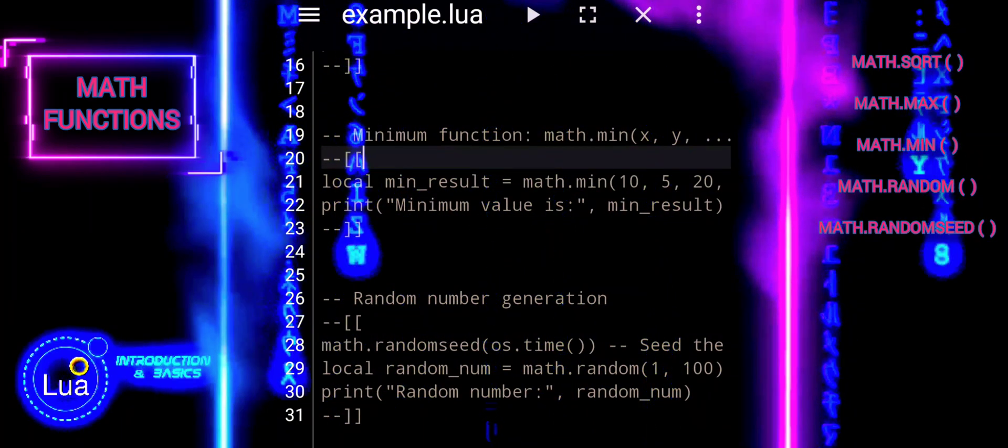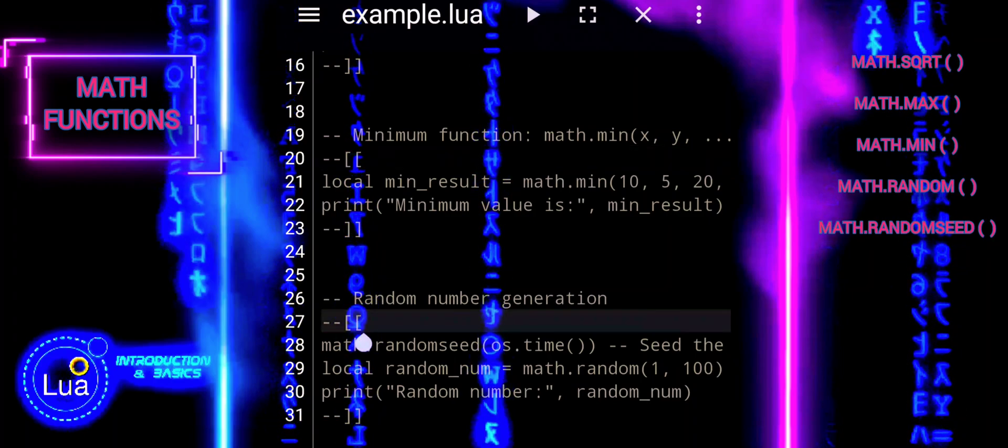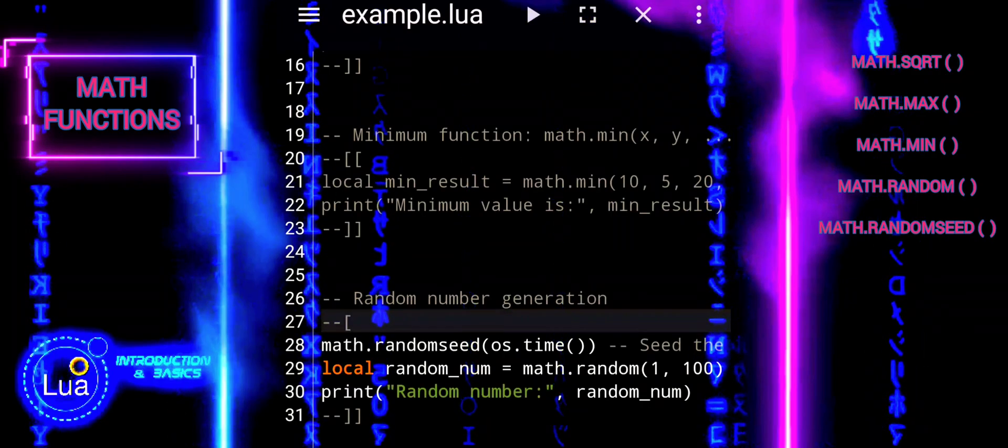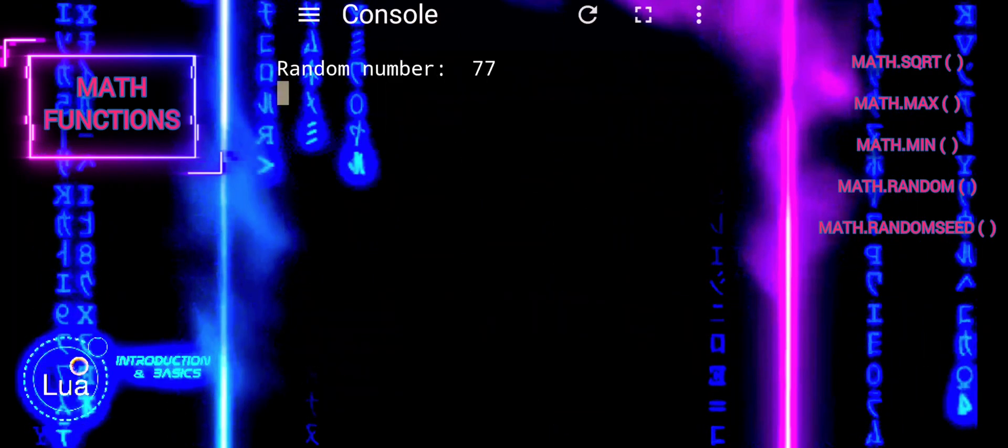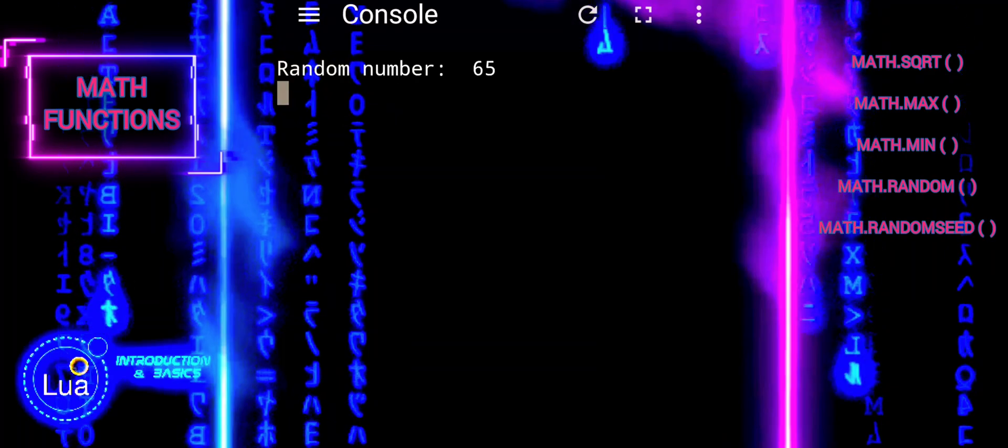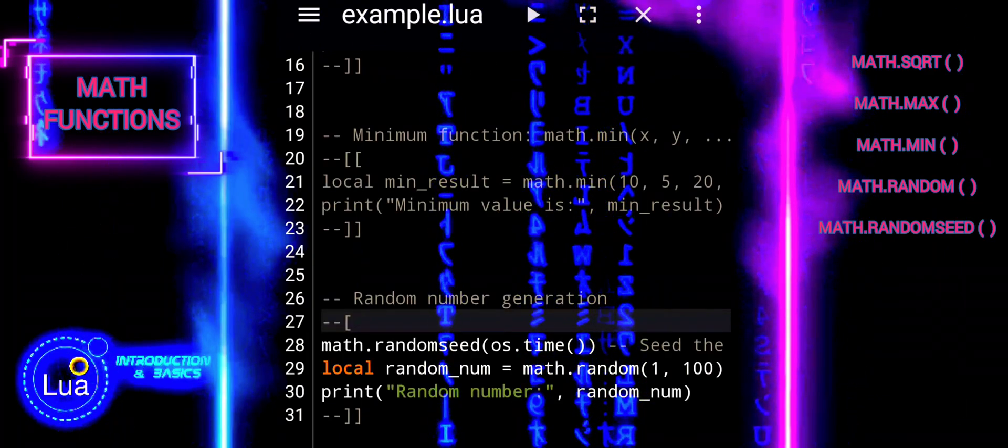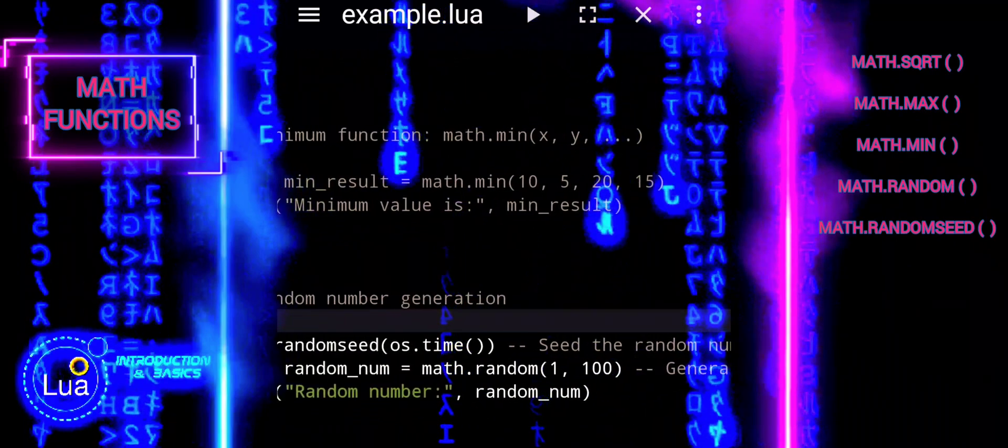We are already familiar with math.random and randomseed, so let's recap. Seeding the random number generator ensures that the sequence of random numbers is different each time the program is run. Using math.random with specified bounds allows you to generate random numbers within a specific range.